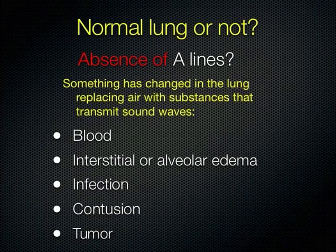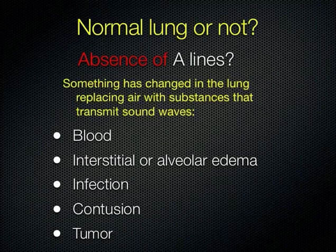When wondering whether you have normal lung, ask: are the A-lines gone? If the A-lines are gone, that means there's not air there — something else has replaced the air in the lung. That could be blood, edema, infection, contusion, or tumor. Any number of things can obliterate the A-lines, and then you have to start thinking about what has taken their place.